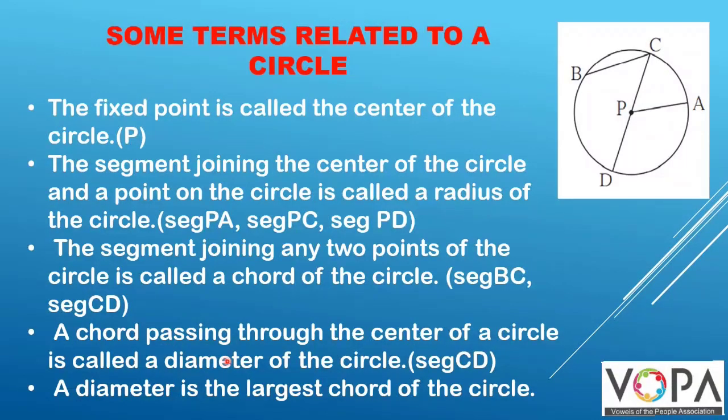A chord passing through the center of a circle is called a diameter of the circle. So segment CD is the diameter of the circle. You can see it is passing through the center. Hence it is called a diameter. Diameter is the largest chord of the circle.